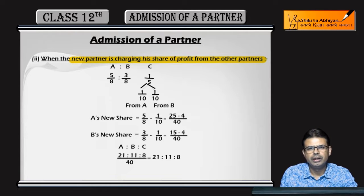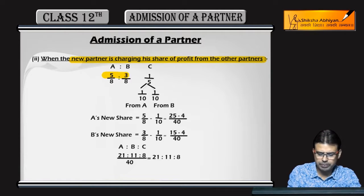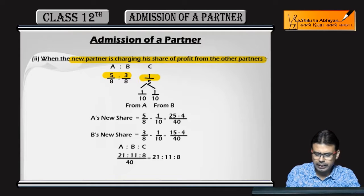In the first part, what have I told you? A and B share 5 is to 3. Just as you can see here, C is 1 by 5 share. This is the first part.